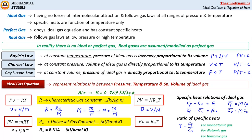For diatomic gases like nitrogen, oxygen, and hydrogen, gamma is equal to 1.4 — and air is also having a specific heat ratio of 1.4. For triatomic gases like carbon dioxide, its value is taken as 1.3. So this was all from the topic of ideal gas laws and equation of state. In the next video we will study the non-flow isochoric process in detail.